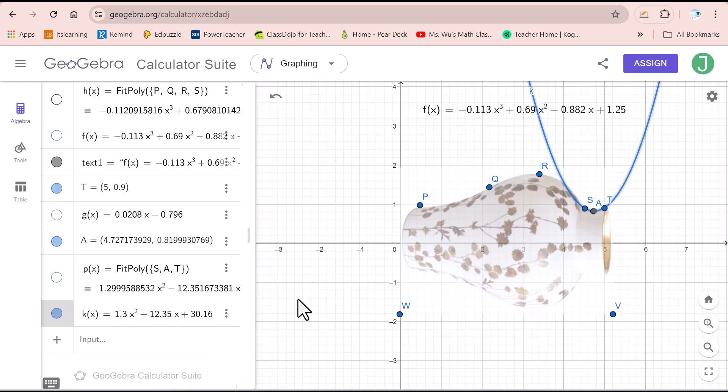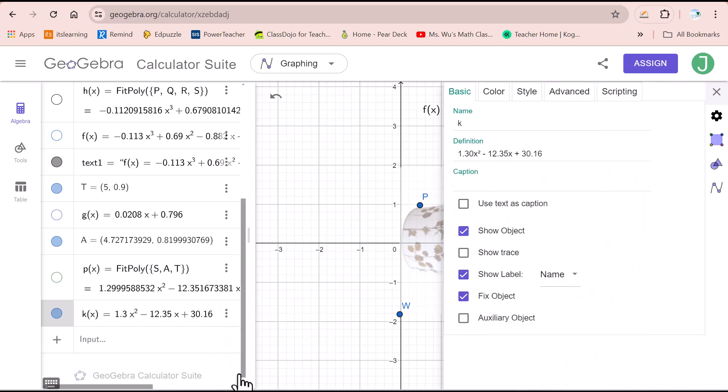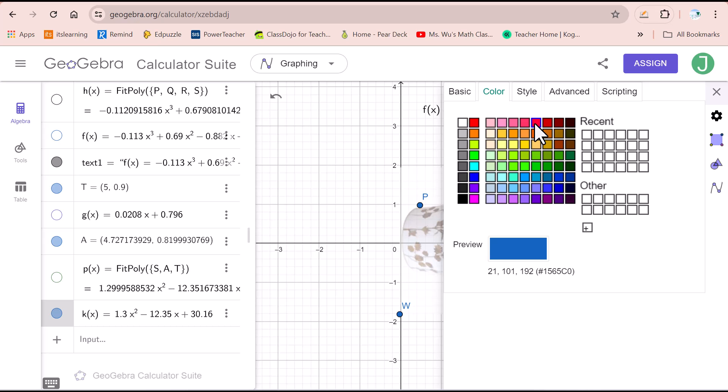If you want to change the color of this graph, click here, setting, color. You can use any color you want.